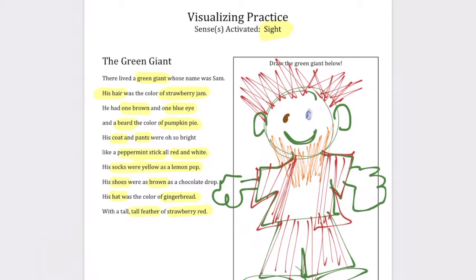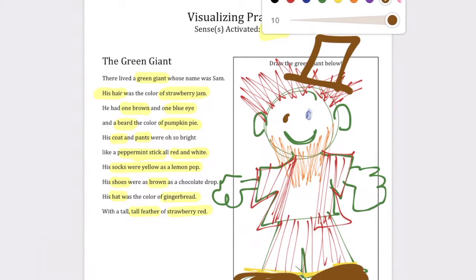Okay, his socks are yellow. Boom. Okay, his shoes are brown. Let's make that nice and big brown shoes. Okay, his hat is the color of gingerbread. There's his hat. And then he has a tall feather of strawberry red.